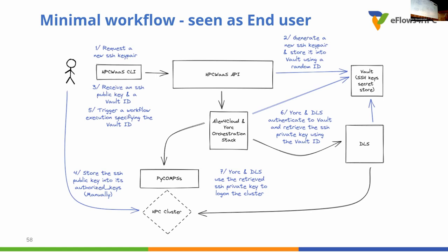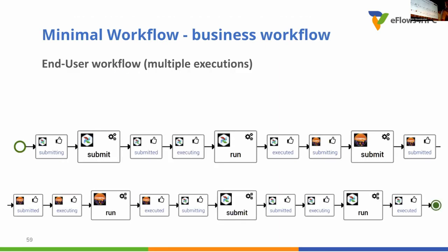Once this is done, the user can trigger a workflow, specifying the Vault ID that will be used to set up the connection within York and the DLS. Both York and DLS authenticate to Vault using this ID to retrieve the private key. Then we can connect into the HPC cluster and trigger PyComps executions. The actual workflow in Tosca is very linear: we first transfer some staging data, trigger an execution using PyComps, and then stage out the data.